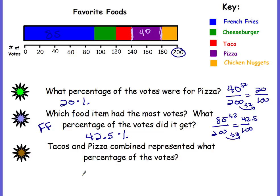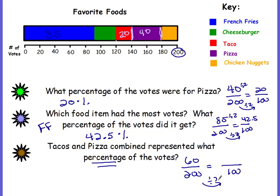Tacos and pizza combined represent what percentage of the votes? Tacos are red, going from 120 to 140 — that's 20 votes. Pizza was already found to be 40 votes. Add them together: 20 plus 40 is 60. That's 60 out of 200, not 60 out of 100. Divide both by 2 to get 30 out of 100, so the combined percentage is 30%.